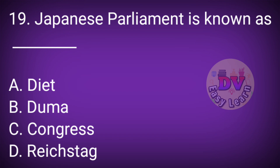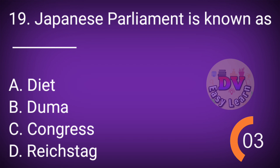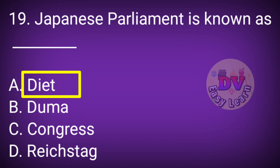Question No. 19: The Japanese parliament is known as — Correct answer: Diet.